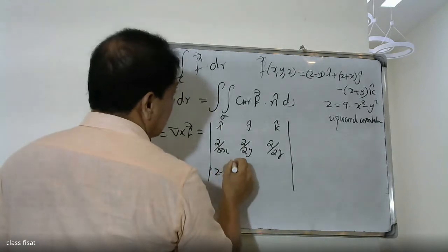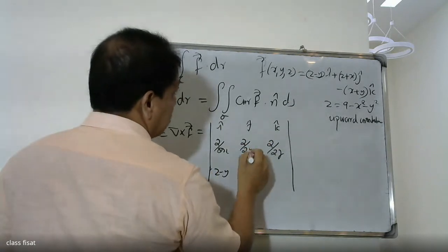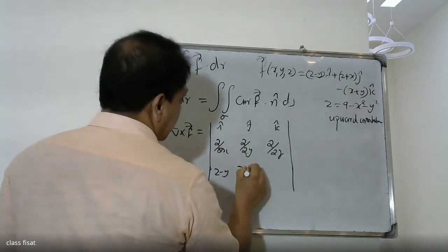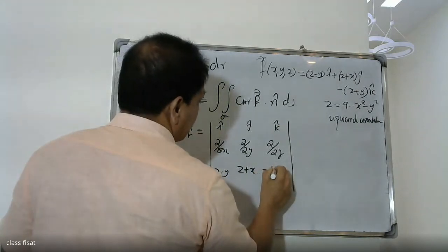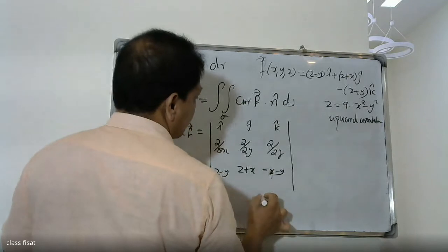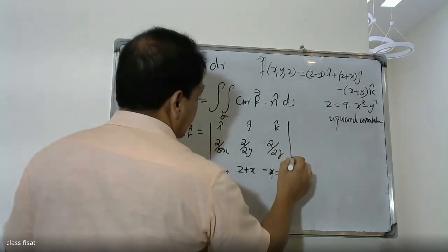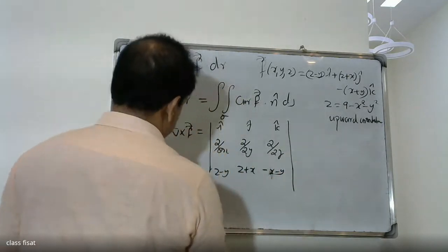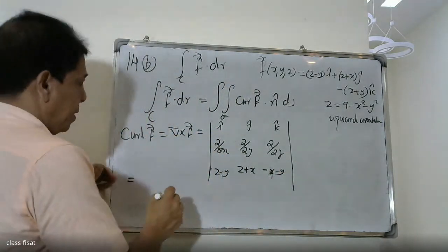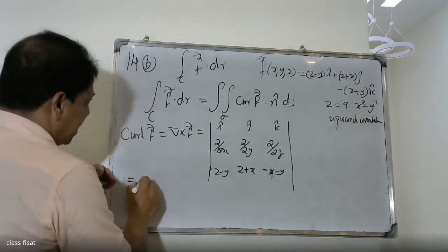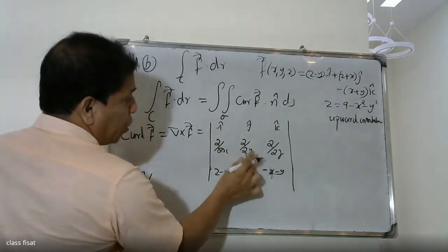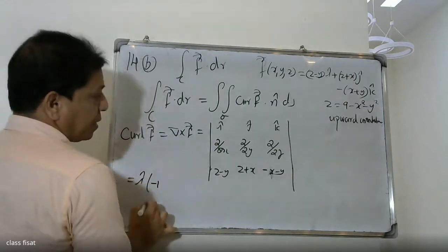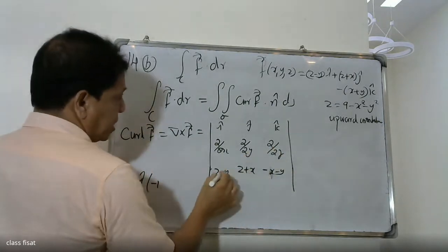We have the cross product. We enter vector i. The partial derivatives: d/dy of (minus 1) and d/dz of x.